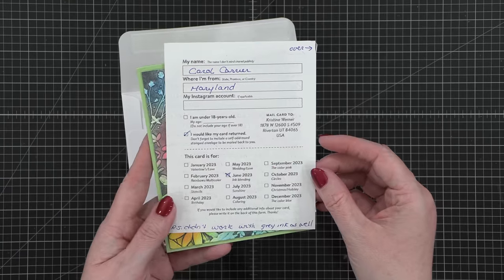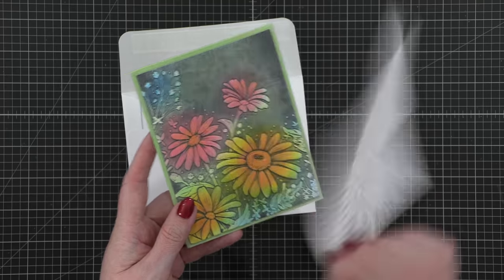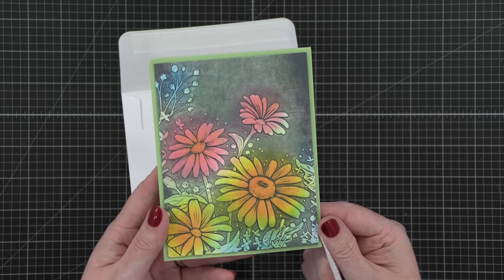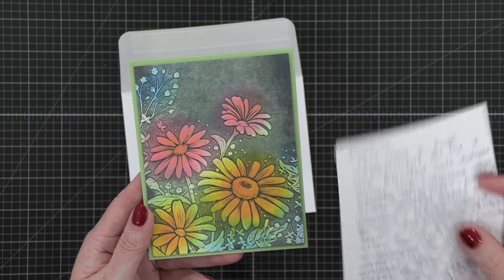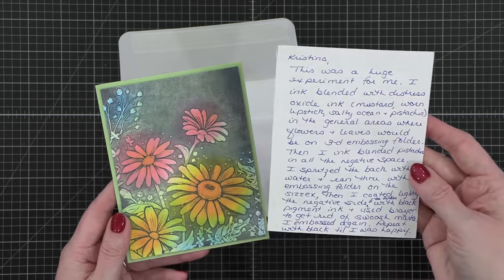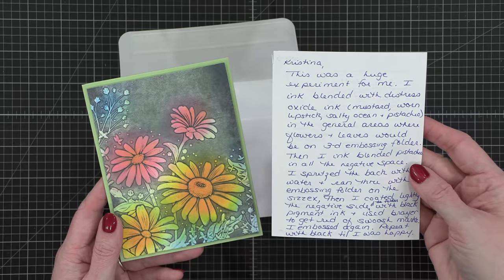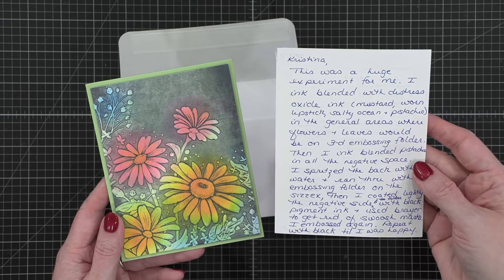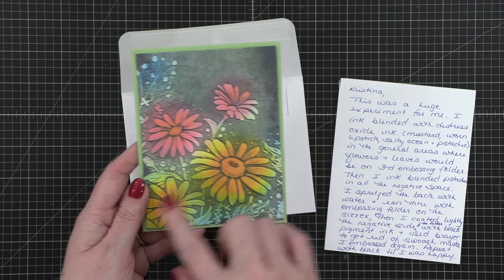This is a card from Carol in Maryland. And this is for the month of June. She has kind of a note on what she did. So first I'm gonna show you her card, which I think is just so creative. It's got all that color. And then she says, this was a huge experiment for me. I ink blended with distress oxide ink, mustard, worn lipstick, salty ocean, pistachio, and the general areas where the flowers and leaves would be on the 3D embossing folder. So she ink blended where the flowers would be.